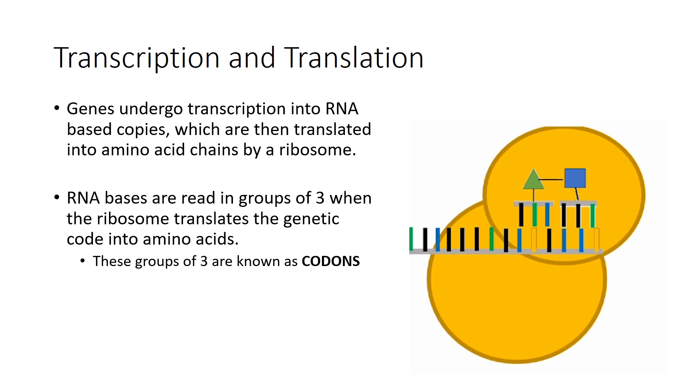With four bases available, there are a total of 64 possible combinations that can be made up. While all of these combinations are present in nature, they only need 21 possible outcomes. This means that several codons can lead to the same outcome.